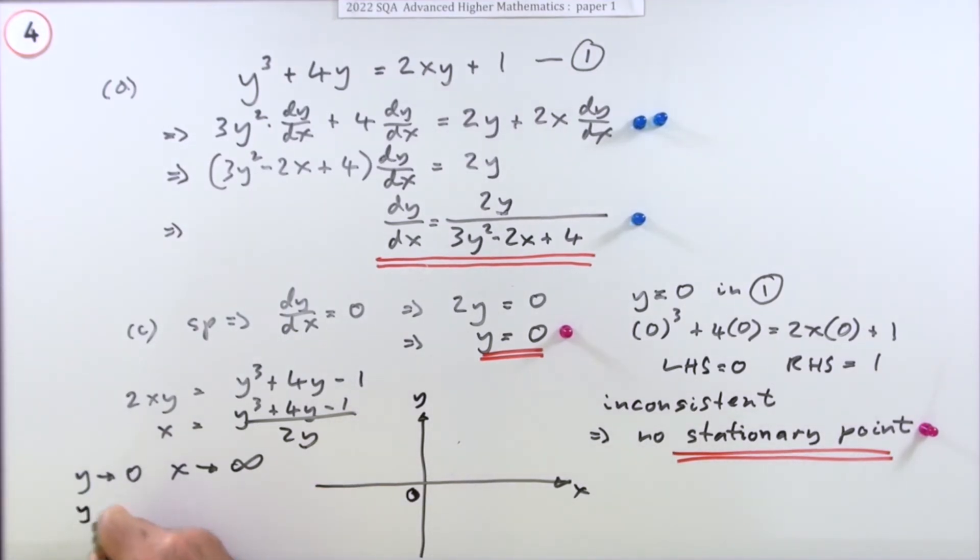As y tends to 0 from above, what happens to the x coordinate? The top becomes -1, but the bottom's positive. So x tends to negative infinity. As y tends to 0 from above, it shoots off to negative infinity, coming like this.